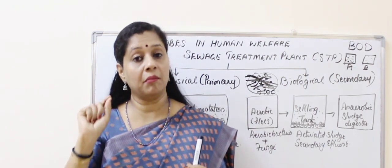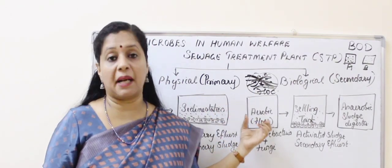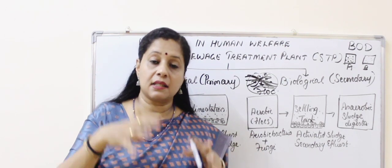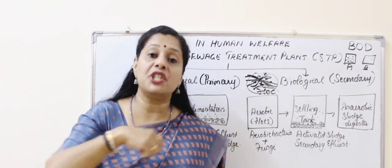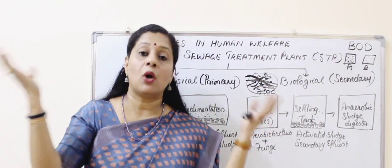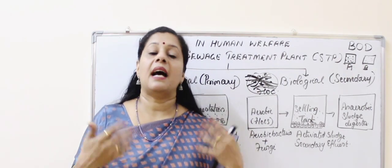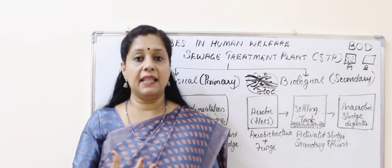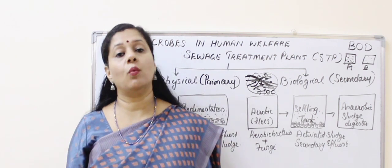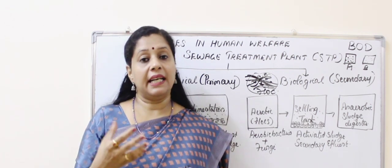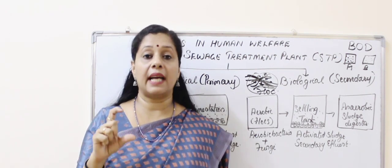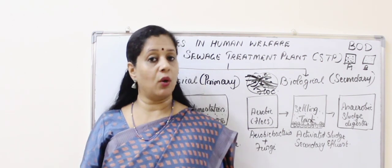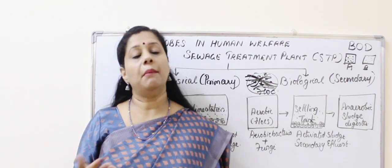Our idea is to reduce the BOD in this primary effluent. For that we use aerobic bacteria and fungi. Since aerobic bacteria and fungi are used in this tank, we do not keep it stagnant but perform continuous agitation. When we stir it continuously, oxygen comes inside and allows bacteria to multiply. As a result they deplete all the organic matter. We take samples to check the BOD quite frequently, and finally when the BOD level has come down and it is safe for releasing into the water body, we proceed. BOD can be defined as the amount of oxygen required for depleting all the organic matter present in one litre of water. Ecologists test pollution this way — if BOD is high, pollution is high; if BOD is less, pollution is less.